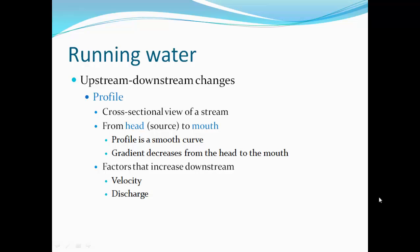Upstream and downstream changes in a river. The profile is the cross section from the top or head of a river down to the end or mouth of a river. We look at the elevation of each point along that river to draw a smooth curve — starting at a higher elevation at the head and lower elevation at the bottom. At the head of the river it is steeper, and as you approach the mouth of the river, it becomes less steep.